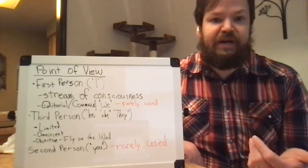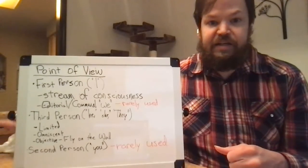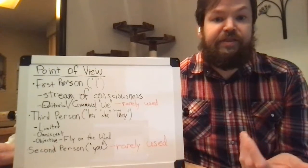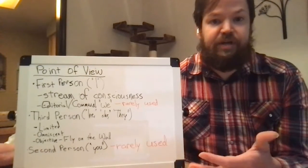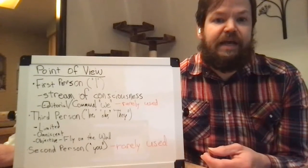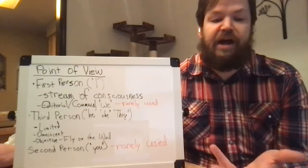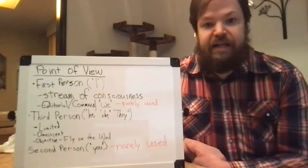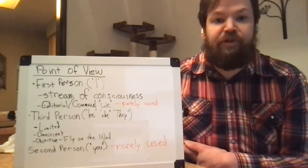Another thing with first person is it includes stream of consciousness. Stream of consciousness is a type of writing where you get inside the head of the character, so whatever the character thinks, that's the thoughts that you get. A famous example of this would be William Faulkner, a writer who does a lot with point of view. He has a book called The Sound and the Fury.